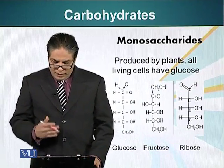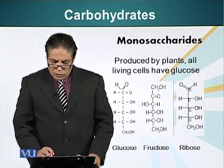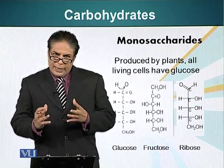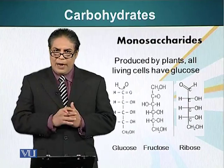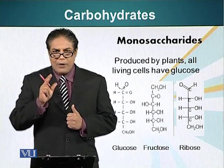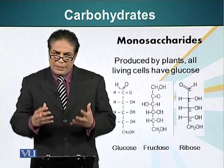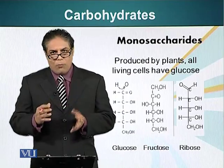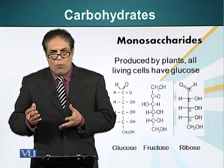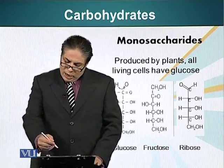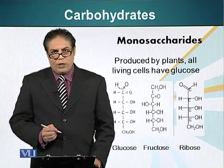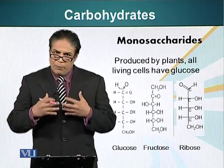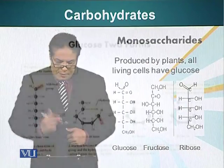The monosaccharides I am going to talk about are glucose, fructose, and ribose. The structures are on the screen. The basic formula of these carbohydrates is a carbon atom attached to a hydroxyl group and a hydrogen atom, giving a formula of CH₂O. These are the linear forms of these molecules; however, in the cell, these molecules can become circular and they exist predominantly in a circular form.